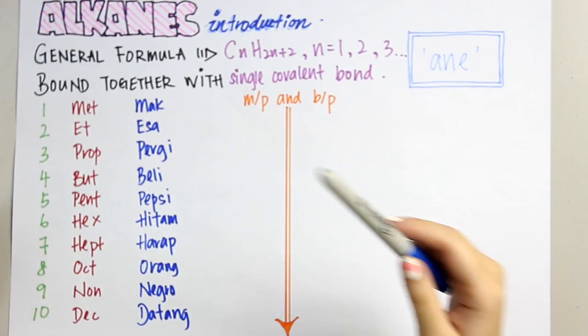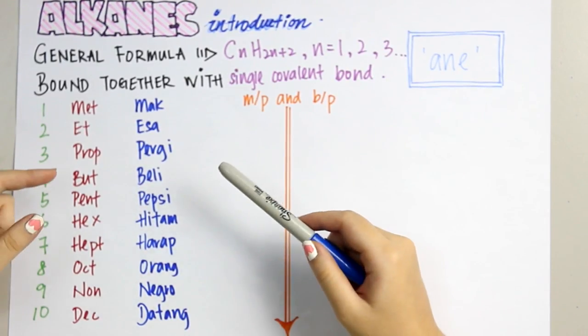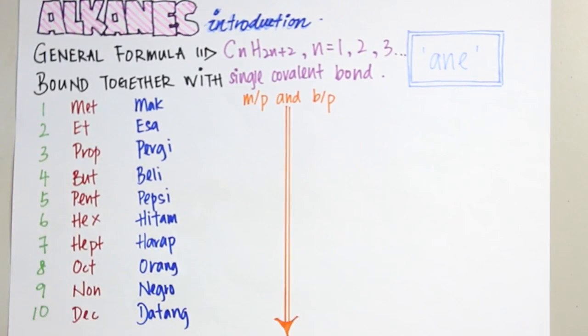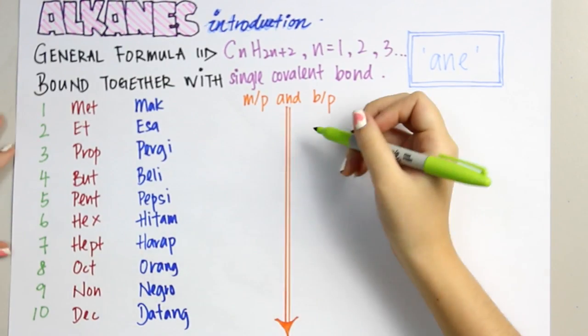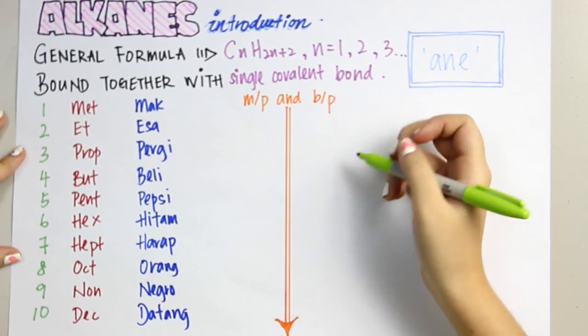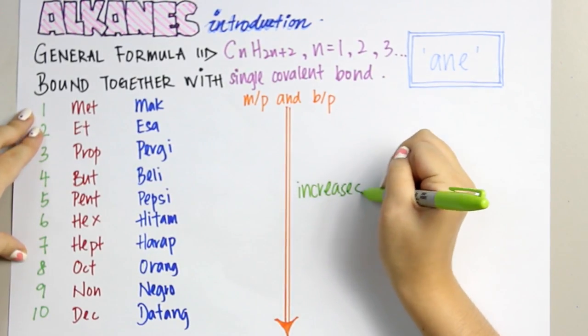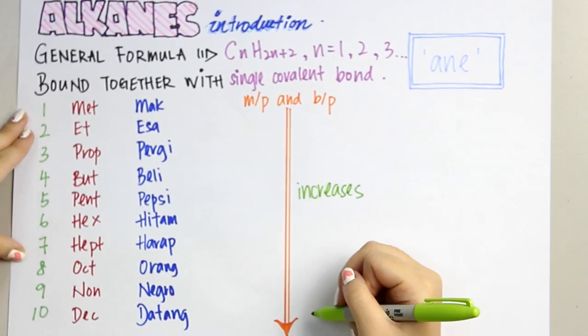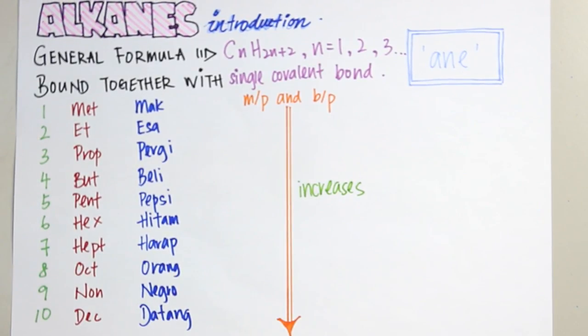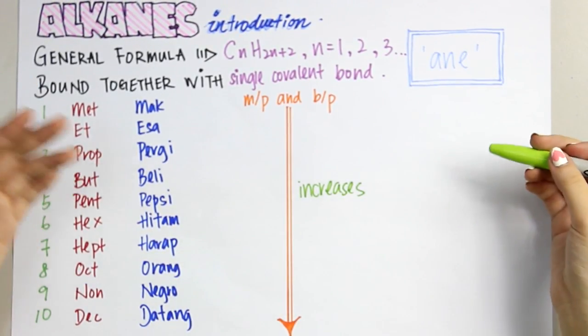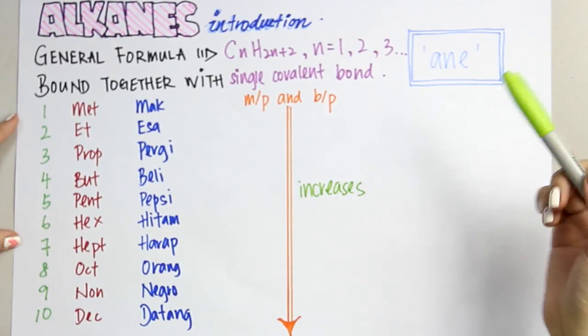Next, the boiling point and melting point for alkanes increase down the series. Besides melting point, boiling point, and formula, we also have to know the state of matter for all these alkane compounds. It's very easy to remember.